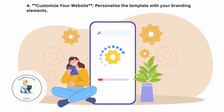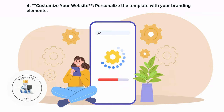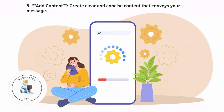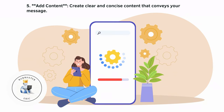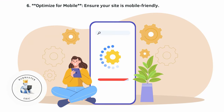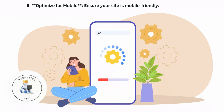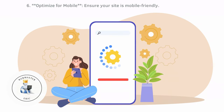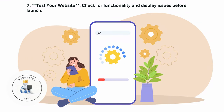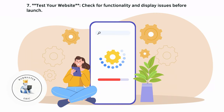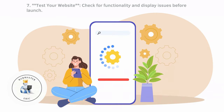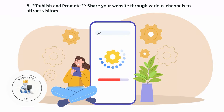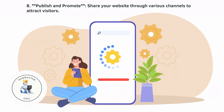Customize your website by personalizing the template with your branding elements. Add content — create clear and concise content that conveys your message. Optimize for mobile to ensure your site is mobile-friendly. Test your website for functionality and display issues before launch. Finally, publish and promote by sharing your website through various channels to attract visitors.